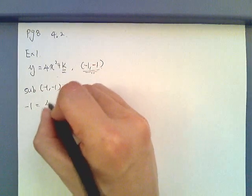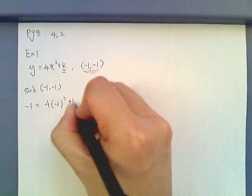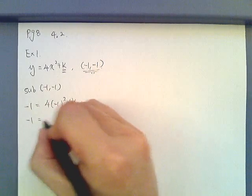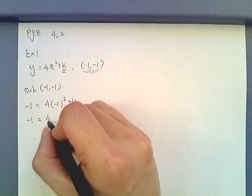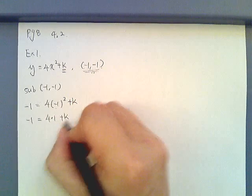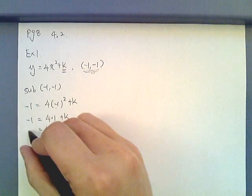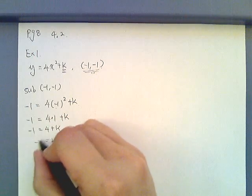I have negative 1 equals 4 negative 1 squared plus k. This gives me negative 1. Now negative 1 squared is 1, so it is 4 times 1 plus k, therefore is 4 plus k equals negative 1. K will be negative 5.